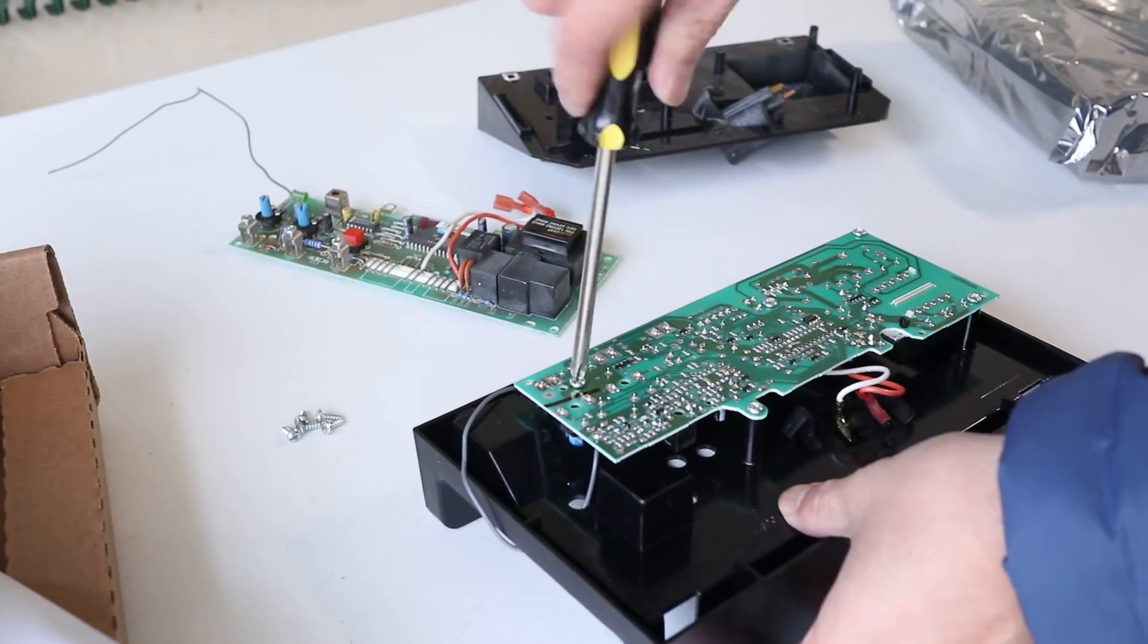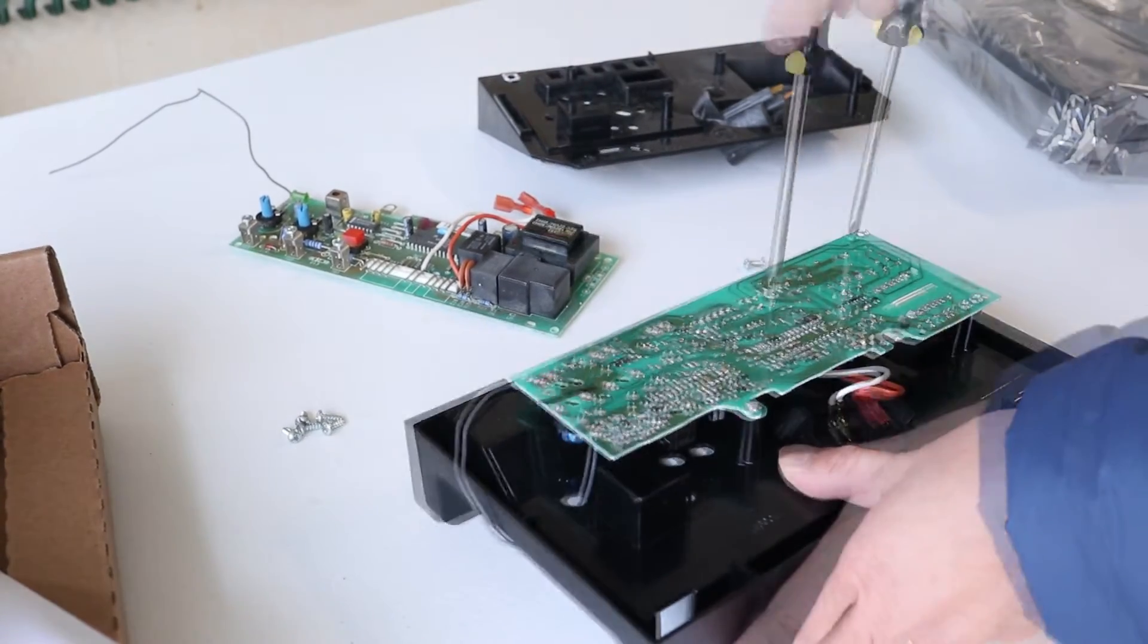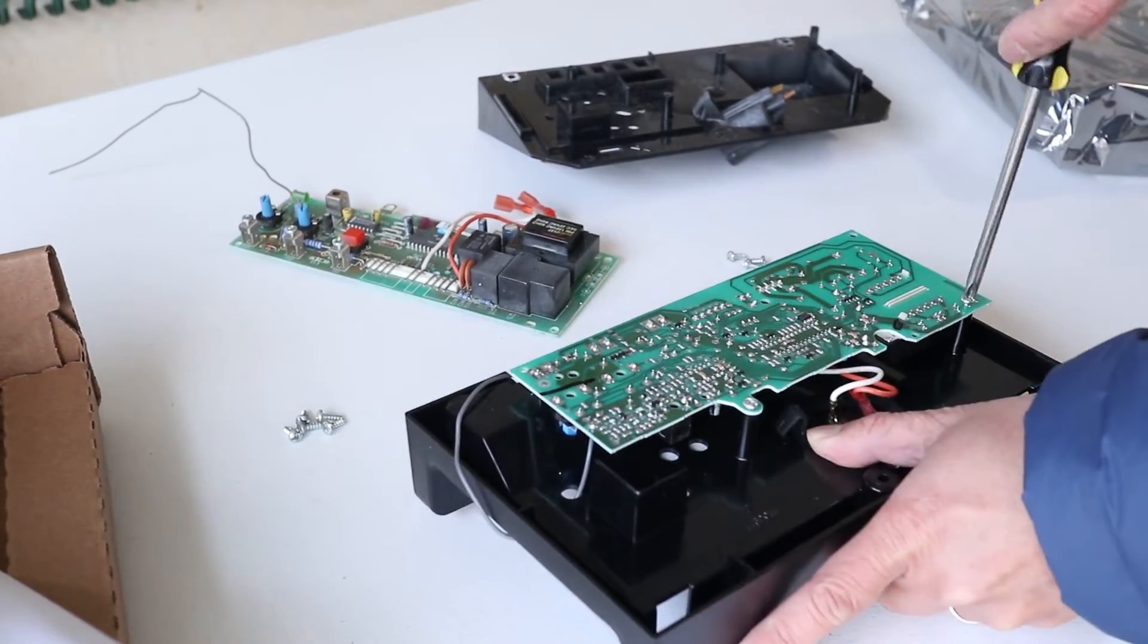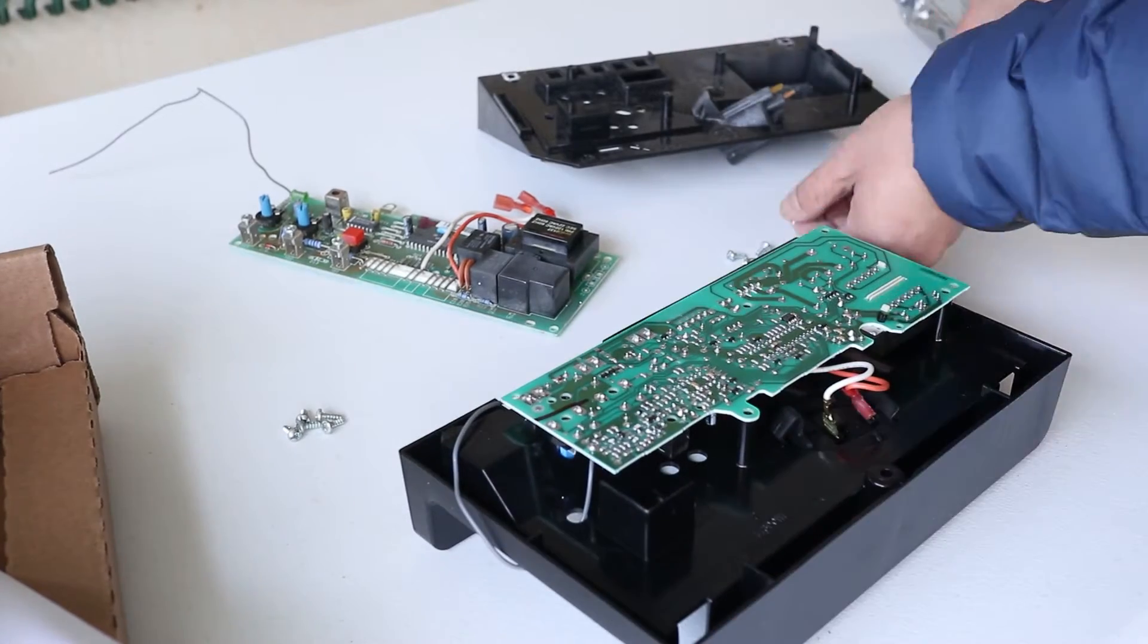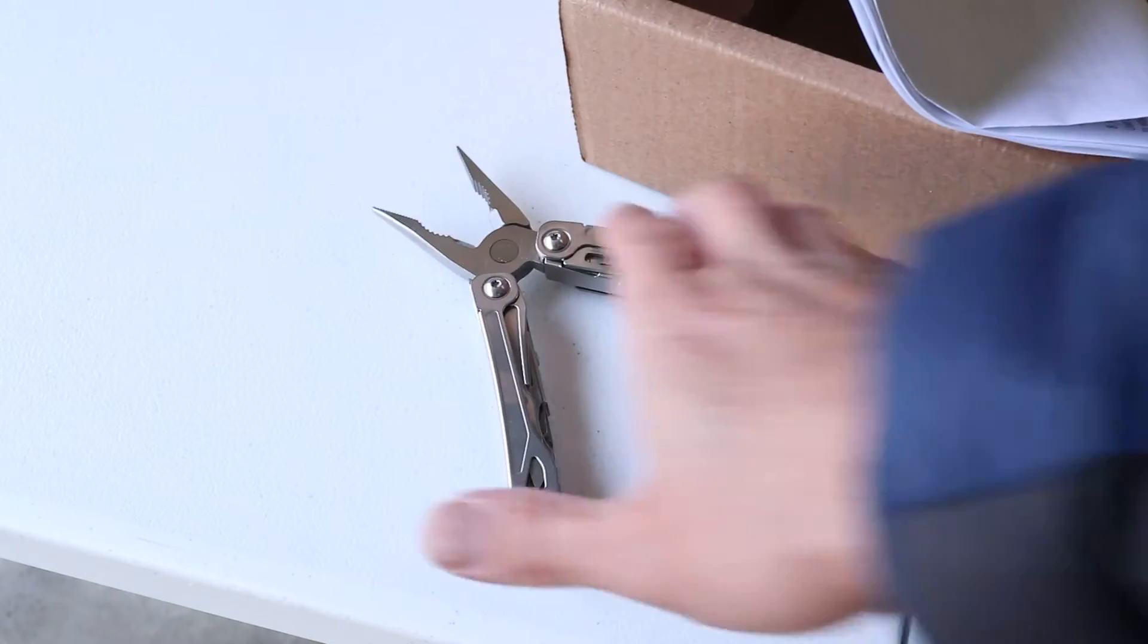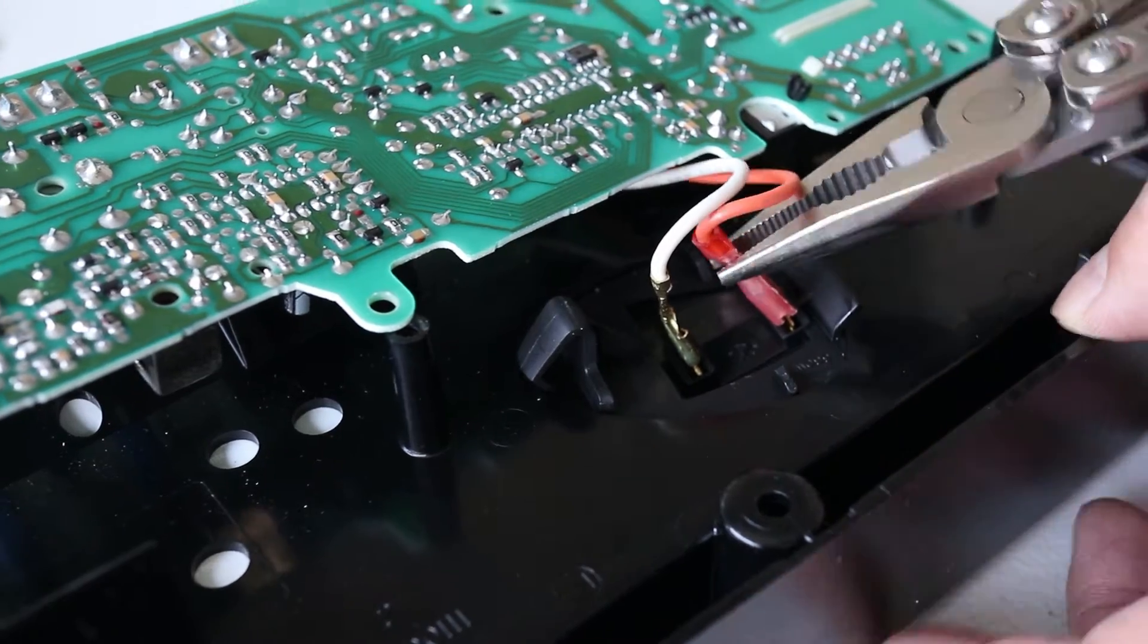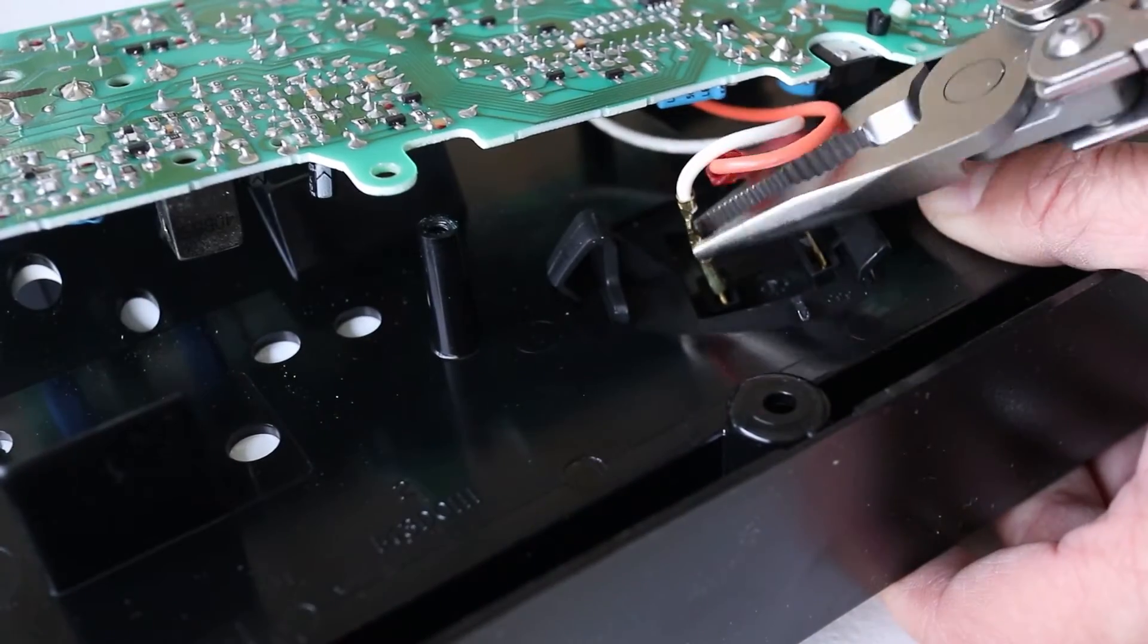Now I'll just repeat the same process on the replacement part. All I really need is a circuit board. After the screws are out, I'll have to disconnect the remaining two wires, so a pair of pliers can really help out here.